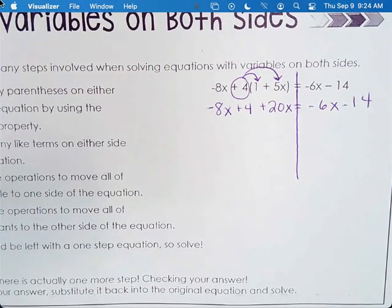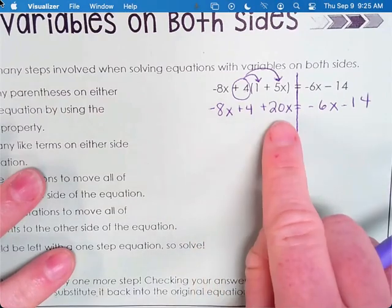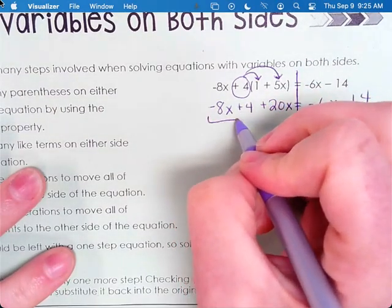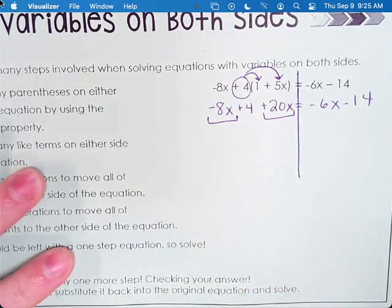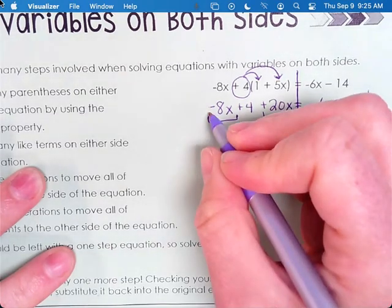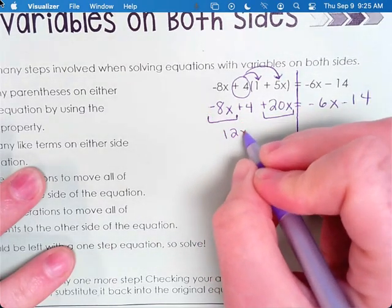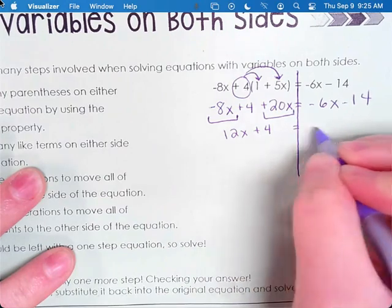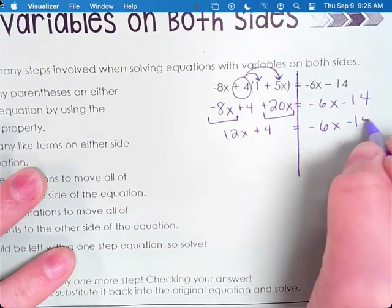Step two is combine any like terms on either side. So on the left side, we need to combine the negative 8x and the positive 20x. 20 minus 8 is 12. So it's 12x plus 4 equals negative 6x minus 14.